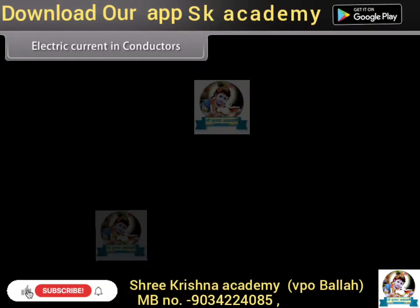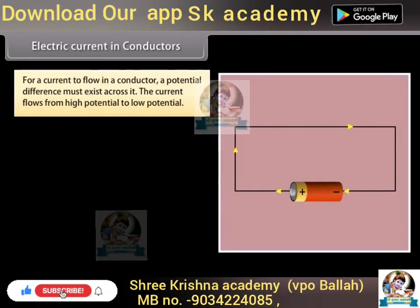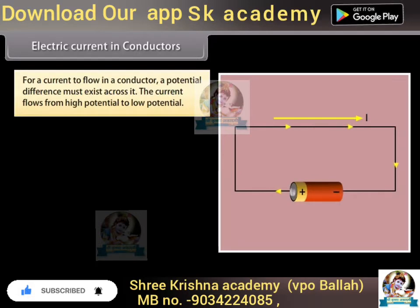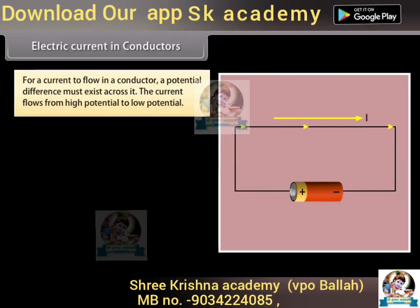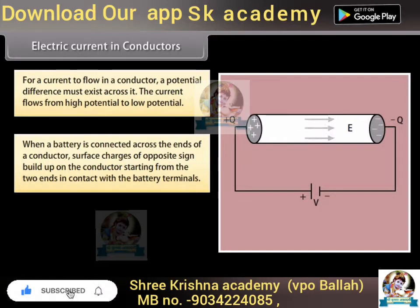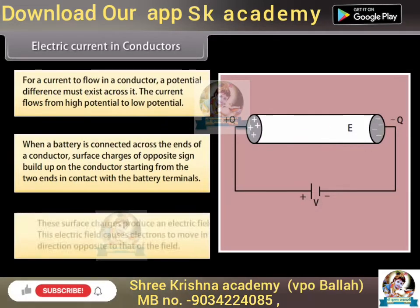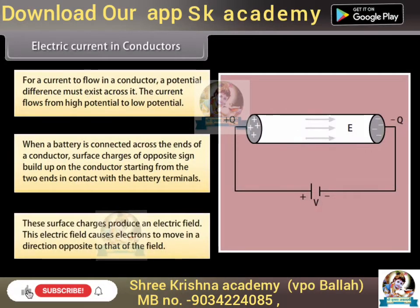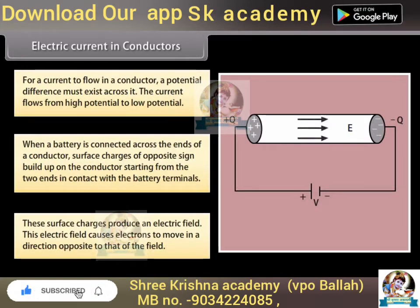For a current to flow in a conductor, a potential difference must exist across it. The current flows from high potential to low potential. When a battery is connected across the ends of a conductor, the surface charges of opposite sign build up on the conductor, starting from the two ends in contact with the battery terminals. These surface charges produce an electric field.